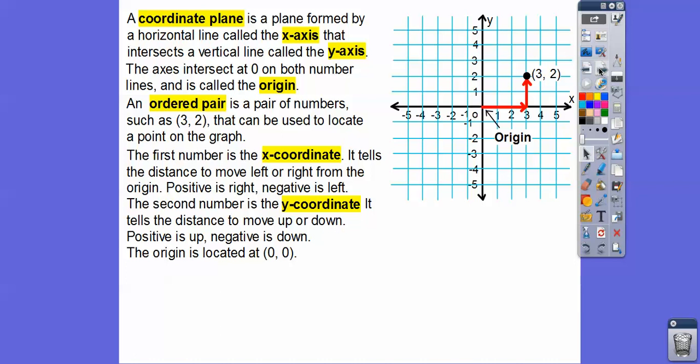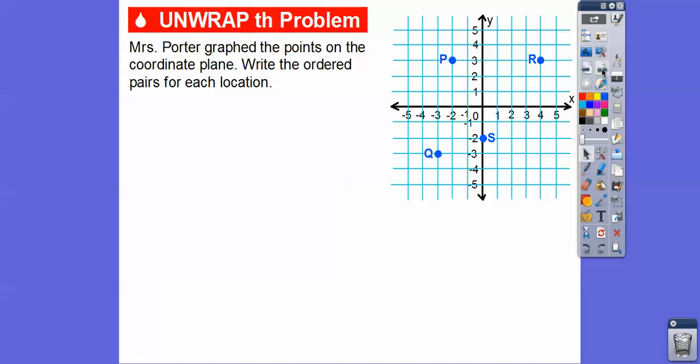The origin is always located at (0, 0). We go left and right zero, we go up and down zero — that's what the origin is.